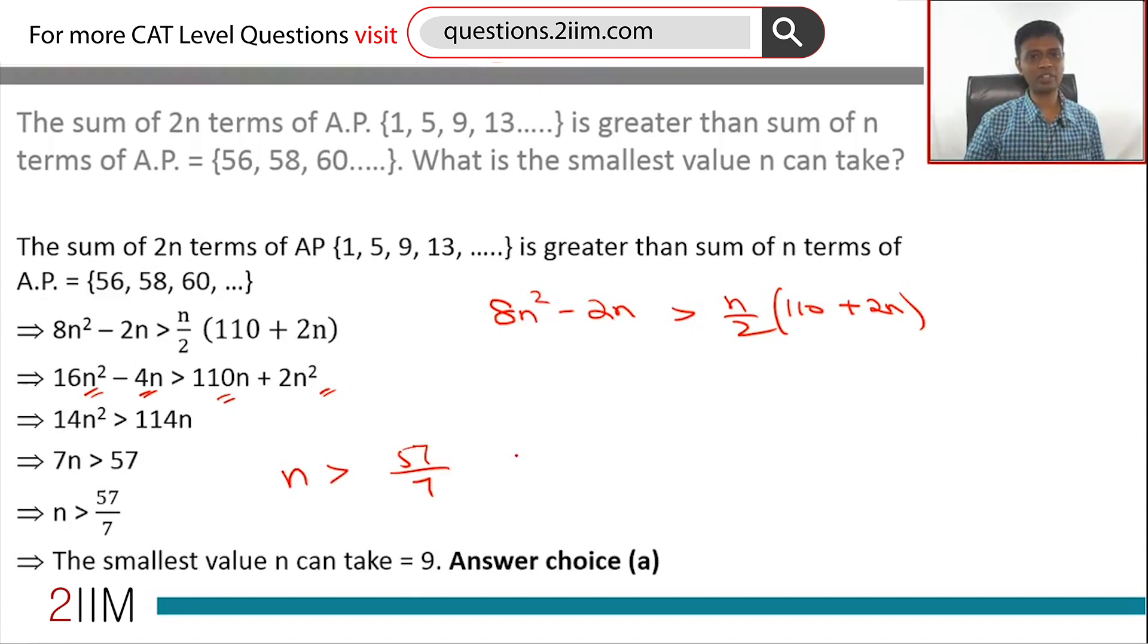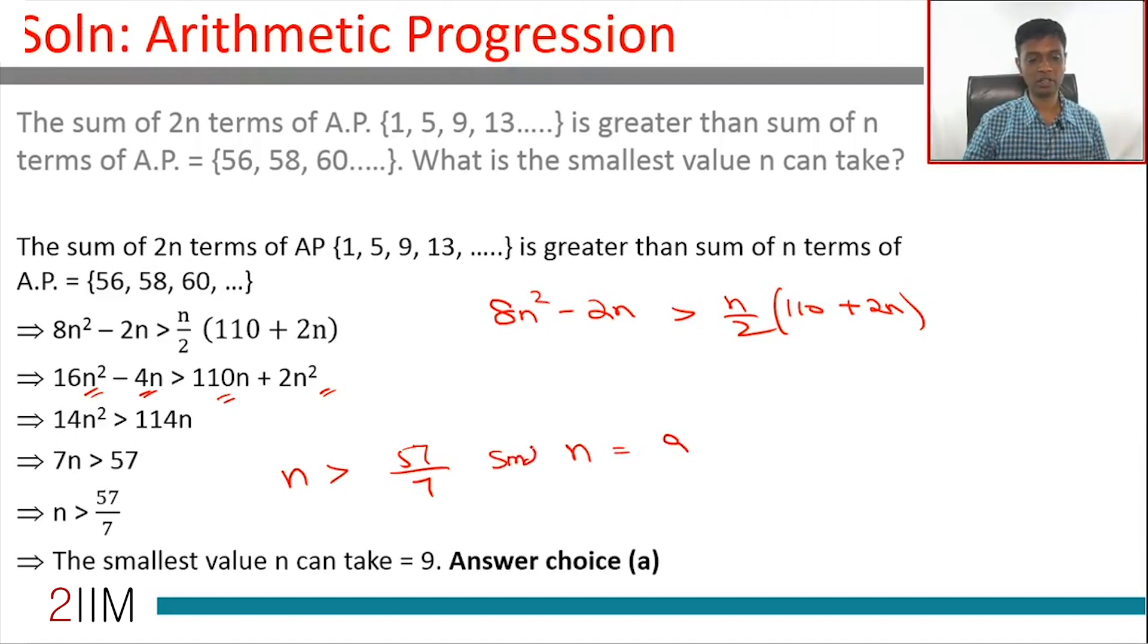57 by 7 is 8 point something. We are looking for an integer. The smallest integer value n can take. The smallest n is 9. 8 won't work. 9 will work. The smallest possible value is 9.